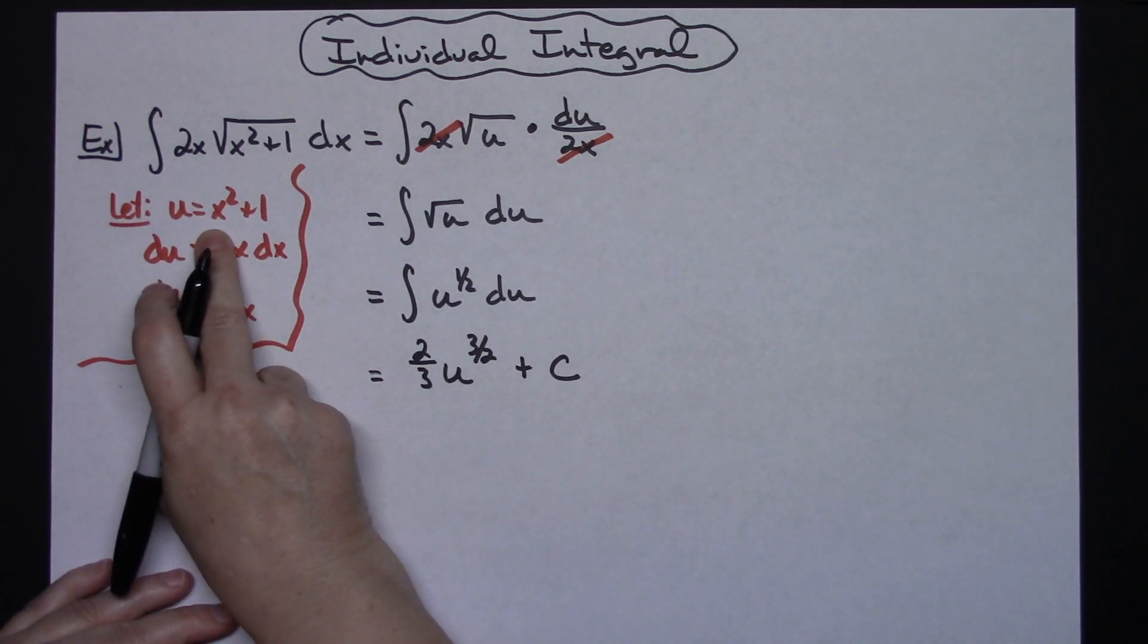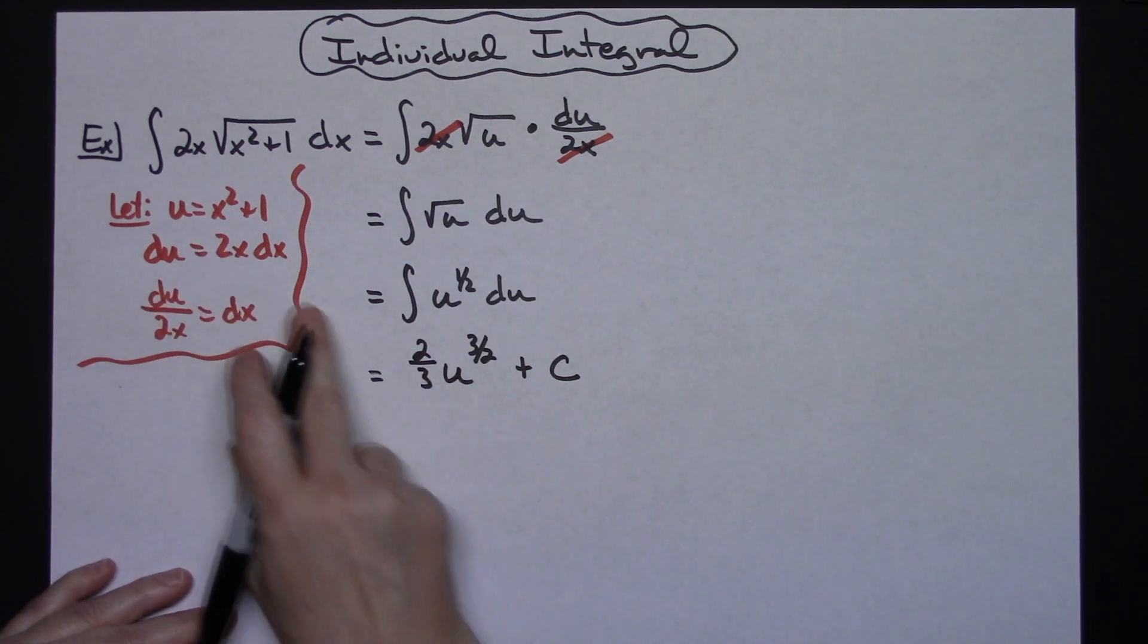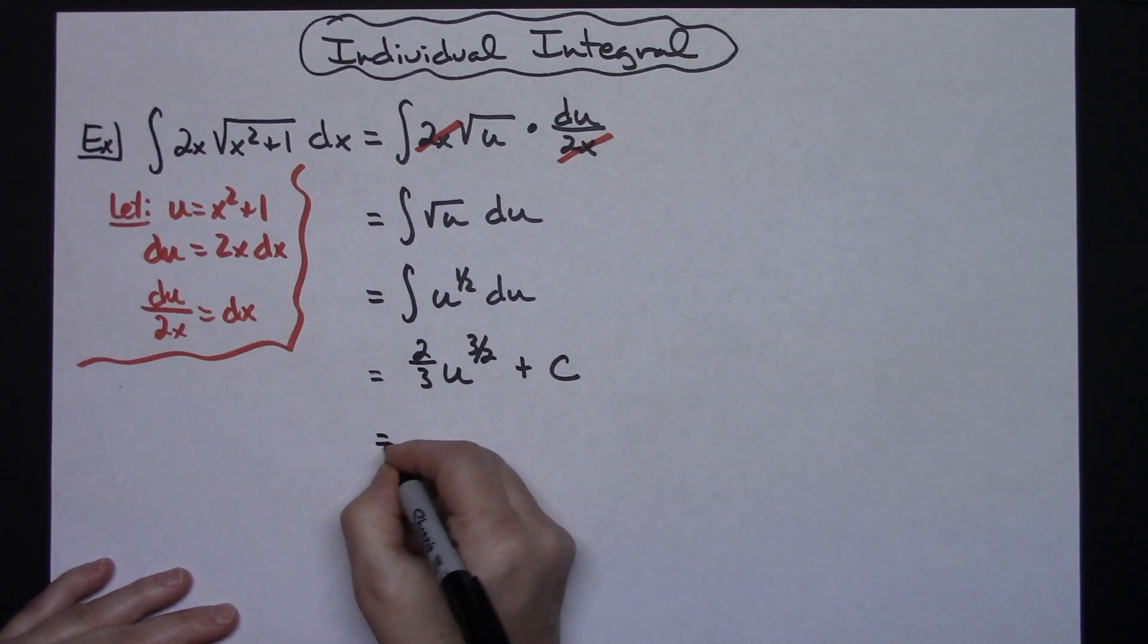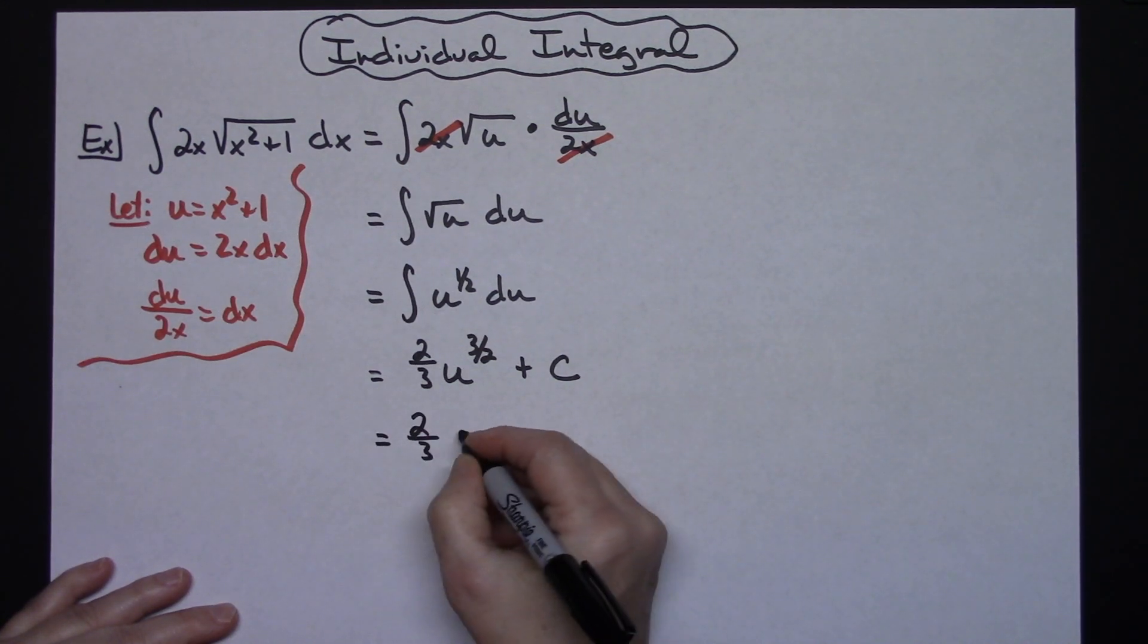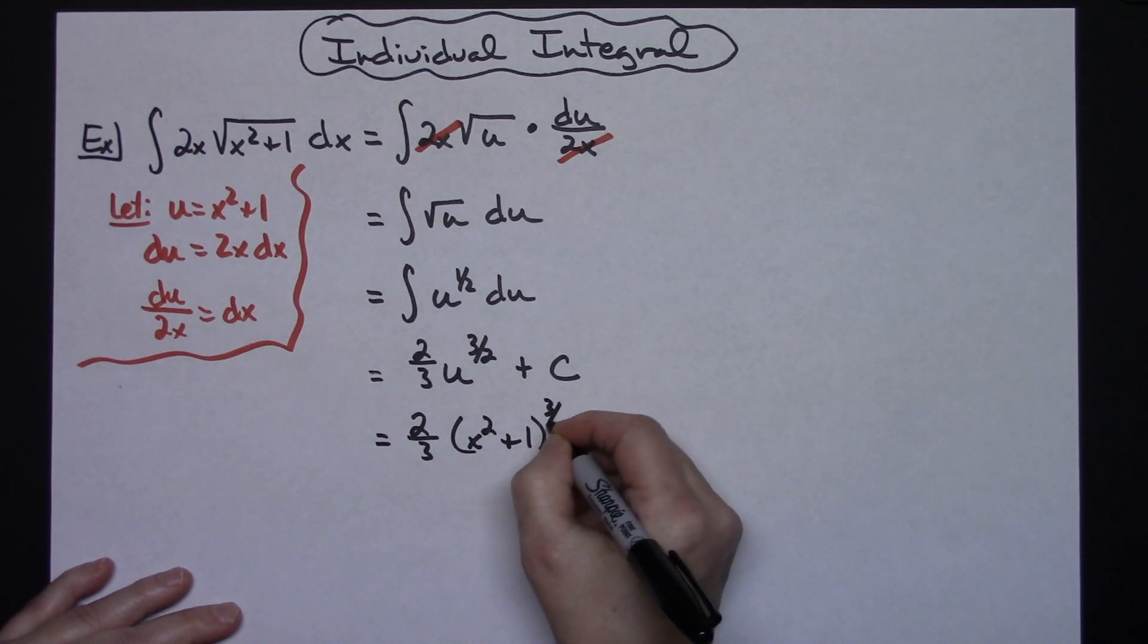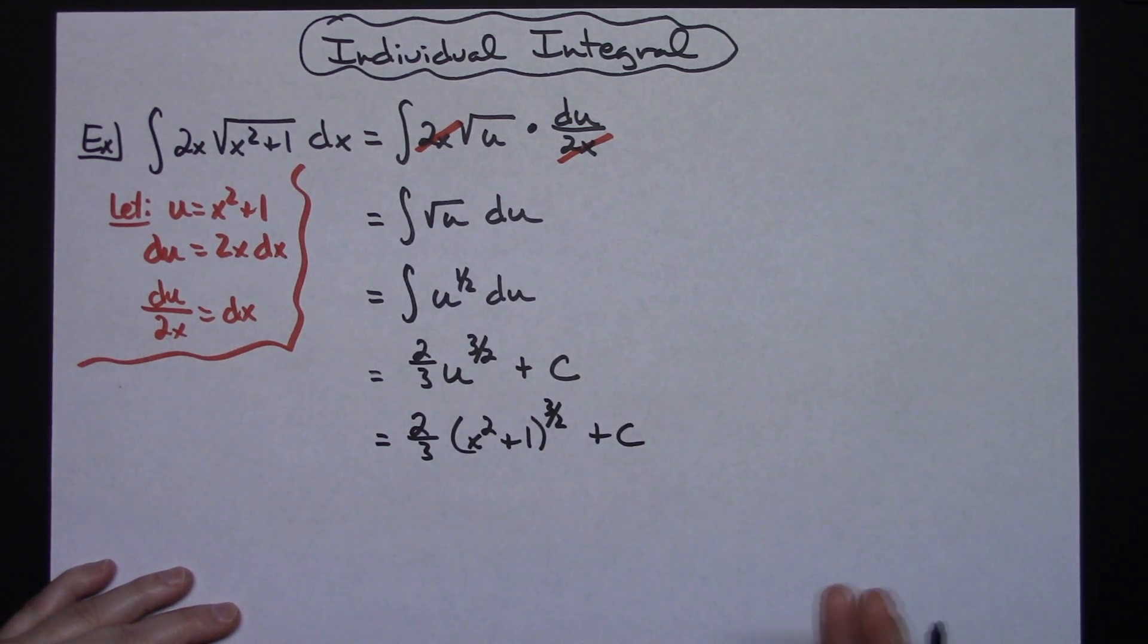At this point one step left, replace the u with the original x squared plus 1 that you had. So we'll have 2 thirds and then x squared plus 1 raised to the 3 halves plus C.